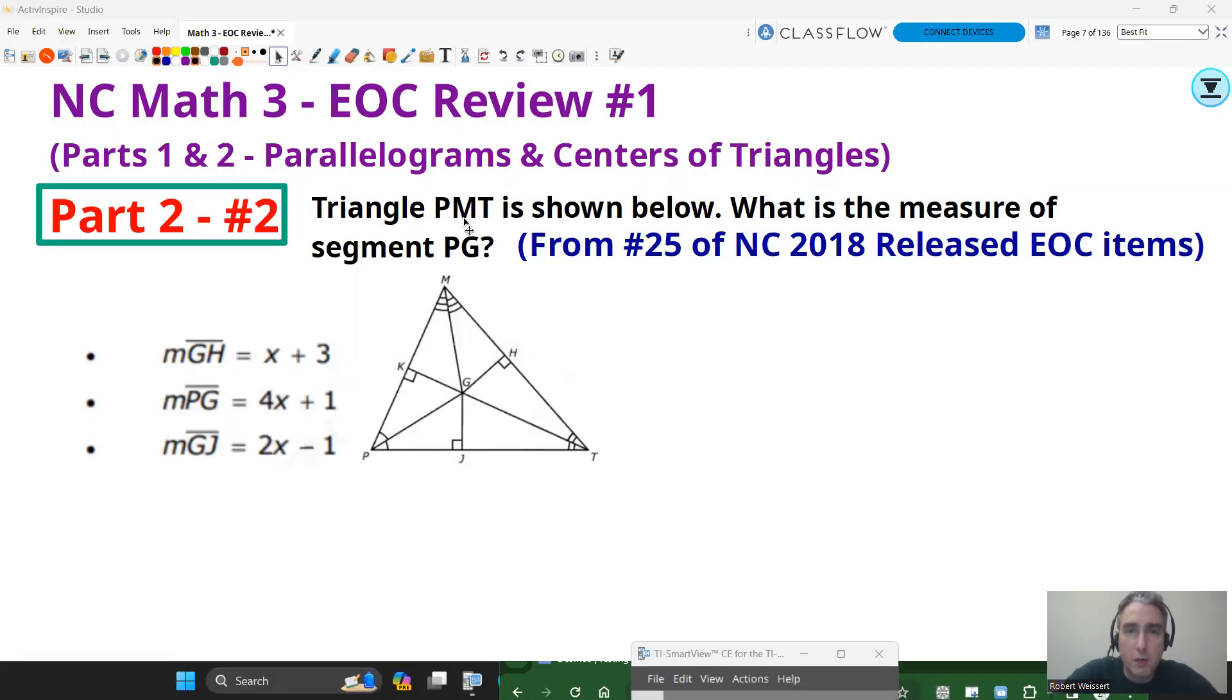All right, let's look at the next question. All right, this question is dealing with a question that was also on the released items from the North Carolina 2018 released EOC. This is question number 25. There is not a lot of information on this problem. It says triangle PMT is shown below. We want to know the measure of segment PG. Now, PG is this length here, and I want to know how long that is. It doesn't give me any additional words for information, but it does show me that these are bisected angles. So these are all angle bisectors. And then since those are angle bisectors, I know that this point right here is an in-center.